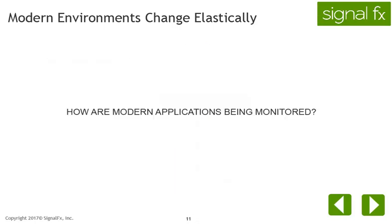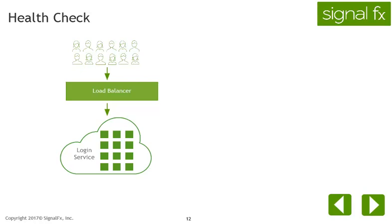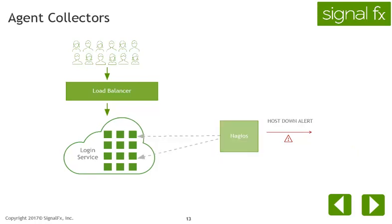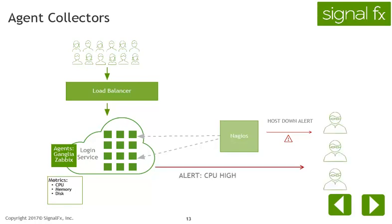How are modern applications being monitored? Most modern applications are being monitored the same way as traditional applications — people still monitor each individual machine. The difference is that now they use open source systems instead of IBM Tivoli or BMC Patrol. They use a tool such as Nagios to ping each machine to see if it is up or down and send a host down alert. Agent collectors such as Ganglia, Zabbix, or Xenos are used to look at CPU, disk, and memory for each machine, and fire an alert when CPU on a single machine goes over the specified threshold.